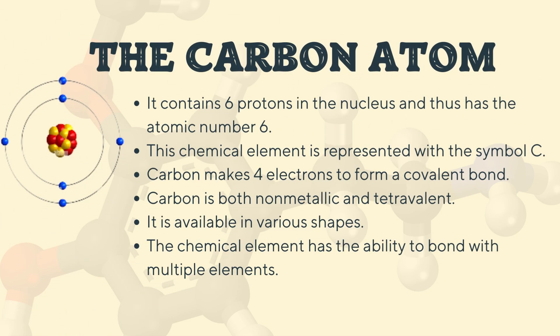Let's discuss the carbon atom. Carbon atoms form the backbone of organic compounds. Now, the carbon atom contains six protons in the nucleus, which is why we say it has atomic number six — the atomic number represents the number of protons inside the nucleus. The number of protons is equal to the number of electrons. We represent this element, carbon, with the symbol C.